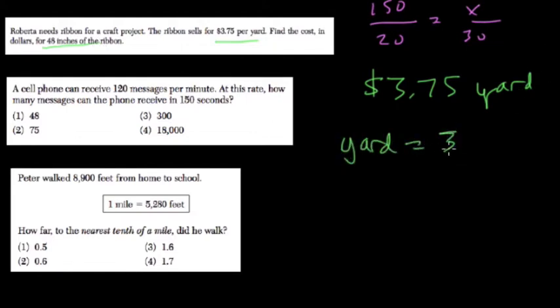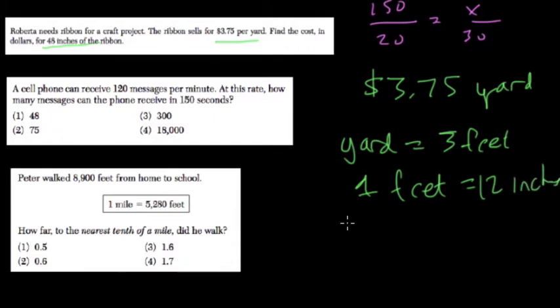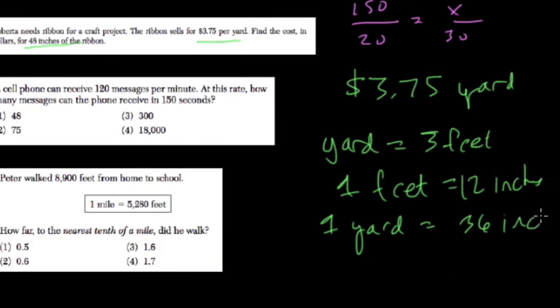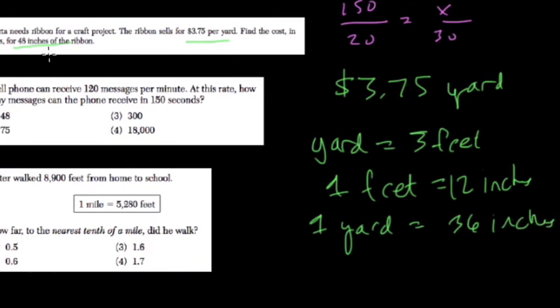is three feet, and every one foot has 12 inches. So three feet would have 36 inches, which means one yard equals 36 inches. If we want to find out the cost for 48 inches of ribbon, we